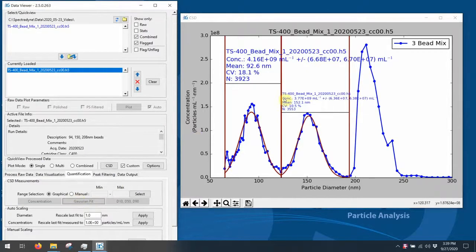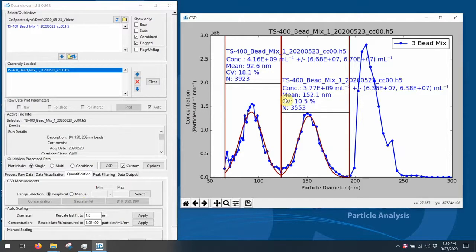And find out that they were 152 nanometers, and again with a concentration near 4 times 10 to the 9th particles per ml.